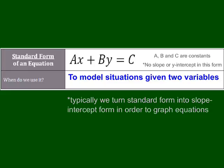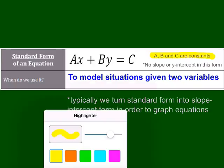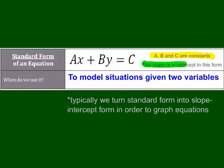Let's start by talking about standard form. Standard form looks like this: it's AX plus BY is equal to C. Something important to know is that A, B, and C are all constants. The X and the Y are always in there. Another important thing is that when things are in standard form, we're not given a slope or an intercept. So what can you really do with it if you don't have a slope or a point or an intercept? Well, it's really good for word problems.